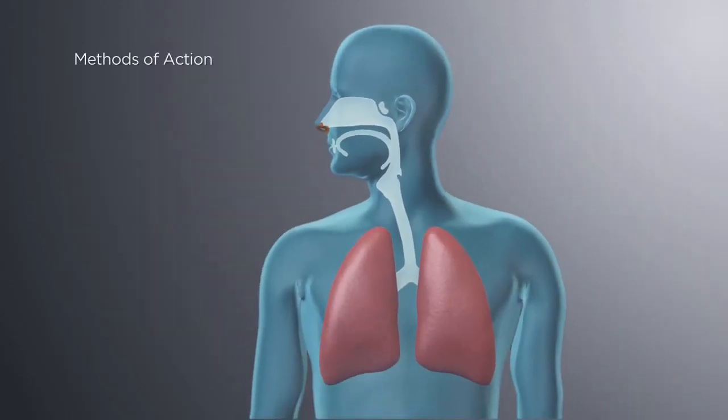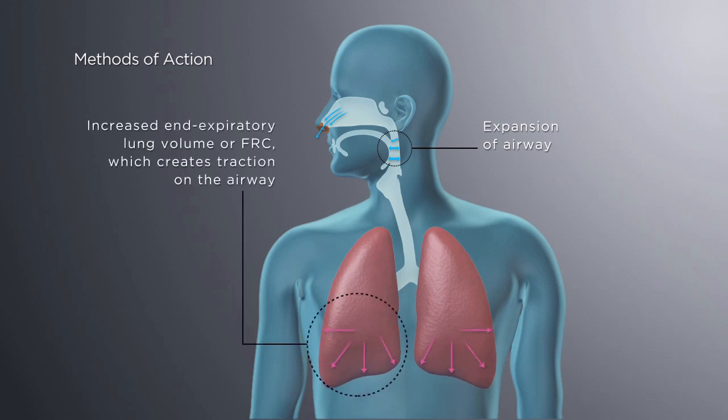There are three possible mechanisms through which ProVent Therapy works: expansion of the airway until the start of the next inspiration; increased end-expiratory lung volume, or FRC, which creates traction on the airway, making it less collapsible; and mild hypercapnia, leading to increased respiratory drive to the upper airway. All three potential mechanisms allow EPAP to stabilize the upper airway and treat obstructive sleep apnea.